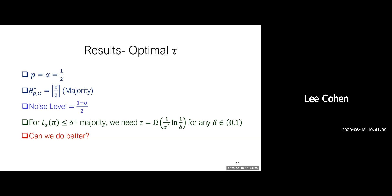But how many tests do we actually need to get an accurate prediction? Sticking to p equals alpha equals half, and remembering that our noise level is (1 minus sigma)/2, when we apply the majority decision rule and want to bound the loss by delta, we need at least on the order of (1/sigma²) log(1/delta) tests for any parameter delta. And the question is: can we do better? Is this really the best we can do?